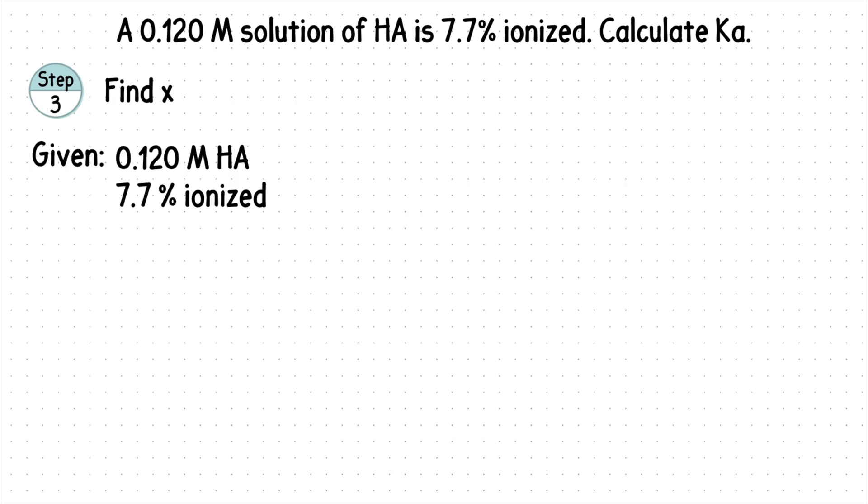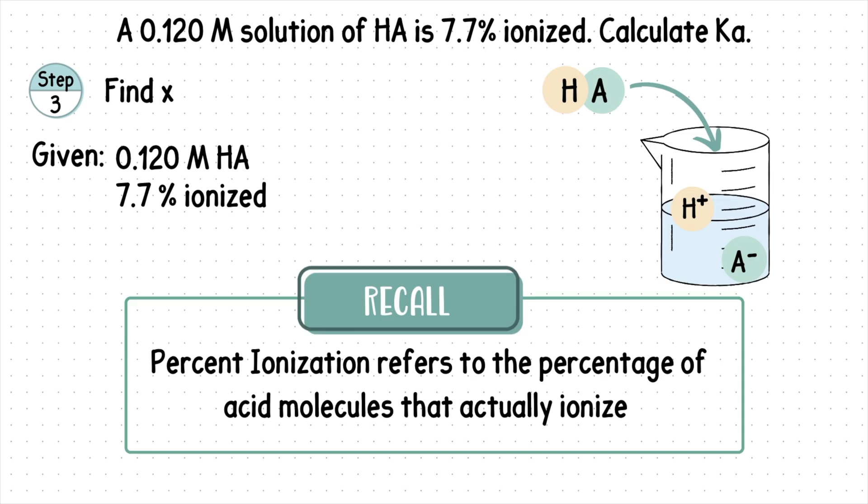Step three, find X. This is where our given percent ionization comes in. Recall, percent ionization refers to the percentage of acid molecules that actually ionize.